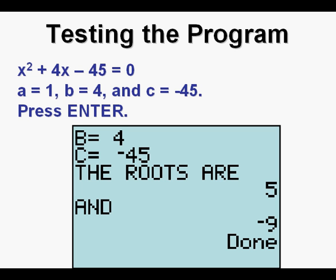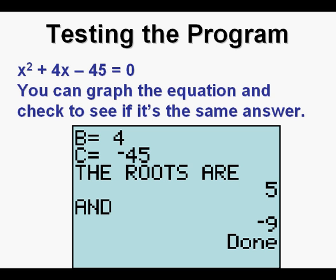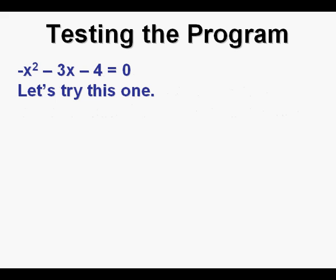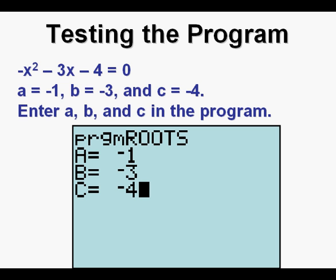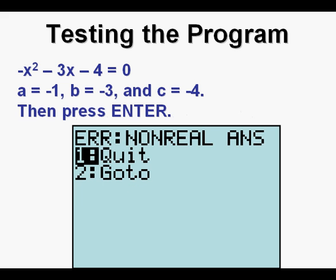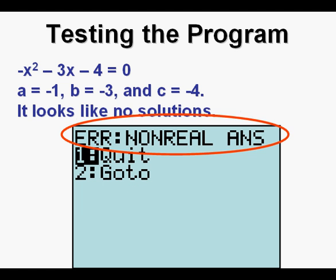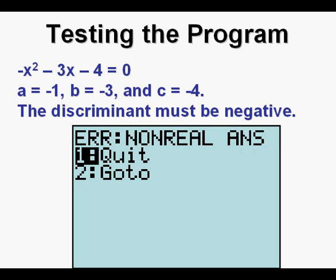You can easily graph the equation as a function to verify the answer. Let's try another one: negative x² − 3x − 4 = 0. For this equation, A equals negative 1, B equals negative 3, and C equals negative 4. Enter negative 1 for A, negative 3 for B, and negative 4 for C in the program, then press Enter. This error message response — 'non-real answer' — means no real solutions. For there to be no real solutions, the discriminant, which is B² − 4AC, must be a negative number.